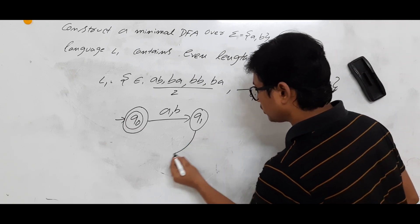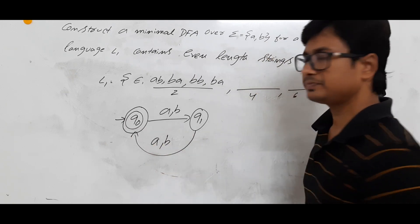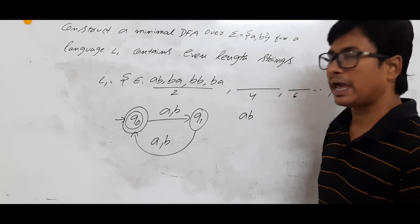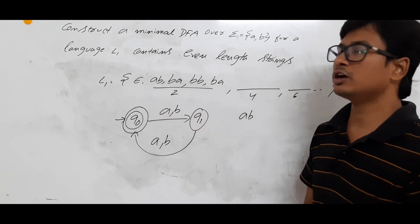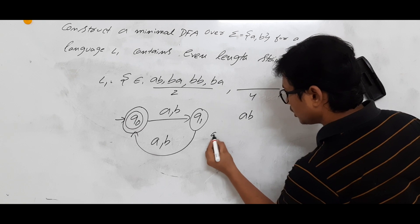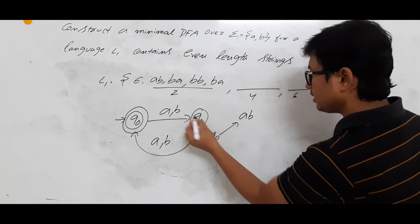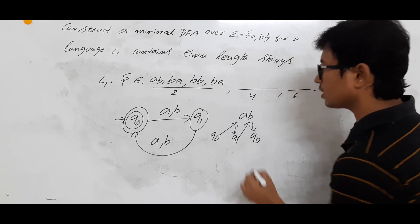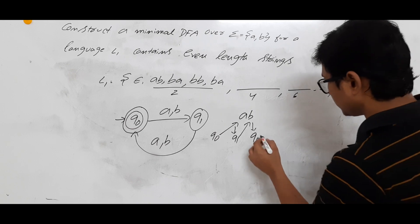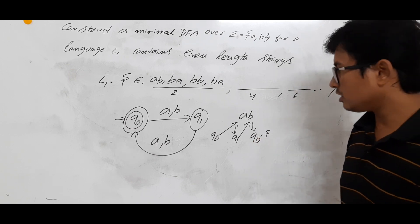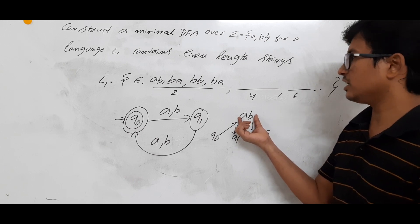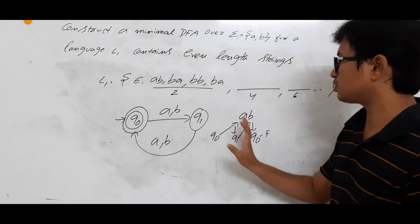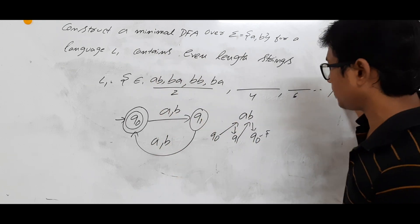If the length is 2 we should accept. For example, AB should be accepted because it belongs to L1. We trace it: from Q0 on A we go to Q1, from Q1 on B we go back to Q0. Q0 is a final state, so the string AB is accepted by the DFA and belongs to L1. This confirms the DFA is correct.